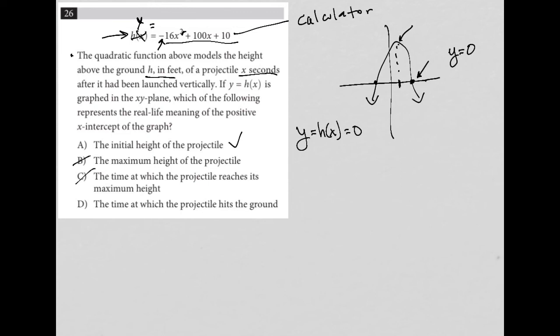Choice D, the time at which the projectile hits the ground. So yeah, I like that as well. Now, when I look at A and D, D is starting to look a lot better than A because it says the time, and we know that X is representative of time, whereas A says the initial height. So the initial height is a Y value, right? That's the h(x). So the height is a Y value. So just based upon that wording, I'm going to say A is gone and D is the best answer.